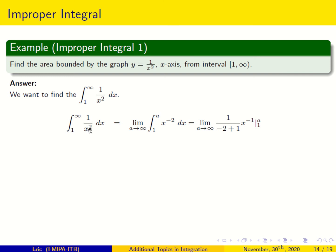Don't forget: 1 over x squared is x to the minus 2. The integral of x to the minus 2 is 1 over (minus 2 plus 1), which is minus 1, times x to the minus 1. And x to the minus 1 is 1 over x. So the integral is minus 1 over x, evaluated at a and 1.